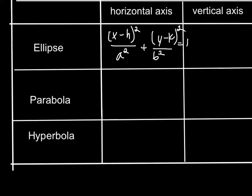For a parabola, we have y minus k squared equals 4p times x minus h.